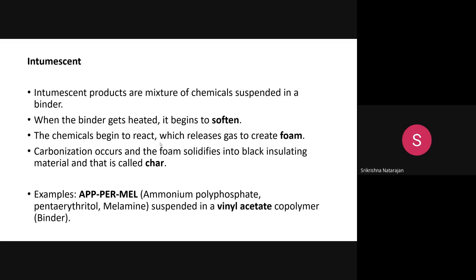When the intumescent softens, the chemicals react to form a foam — it expands in volume. When the chemicals along with the binder are given as a coating and heated, it expands in volume. When burned, it forms a black insulating material — it forms a char. Char formation is a sign of flame retardancy; if a material forms a black carbonaceous material when exposed to flame, it means flame retardancy has been imparted.